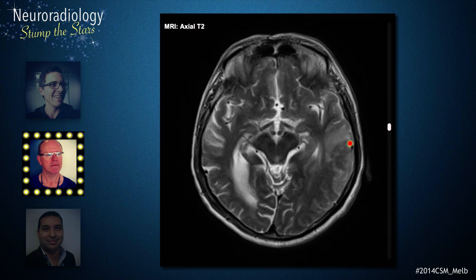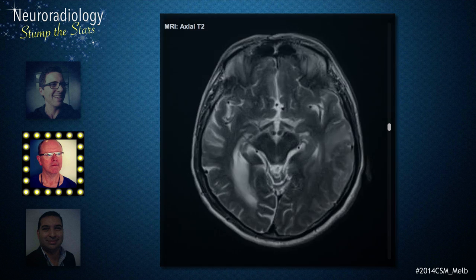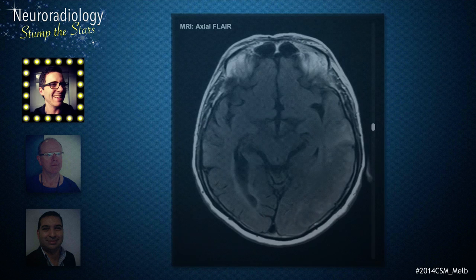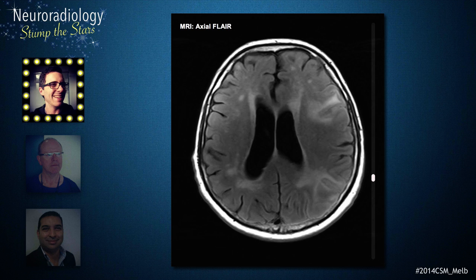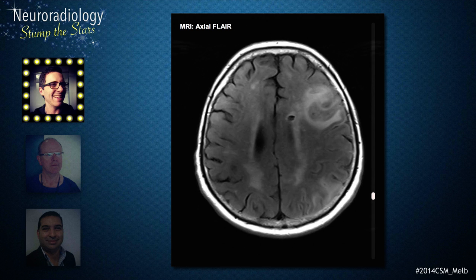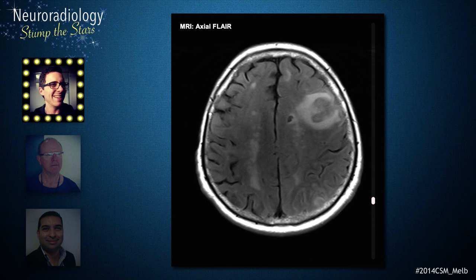These consist of T2 signal abnormality in the white matter, extending into the overlying grey matter. On FLAIR, there is widespread high T2 signal with a relatively circumscribed region with some positive mass effect involving the left frontal lobe. This involves Broca's area, accounting for the patient's expressive dysphagia.